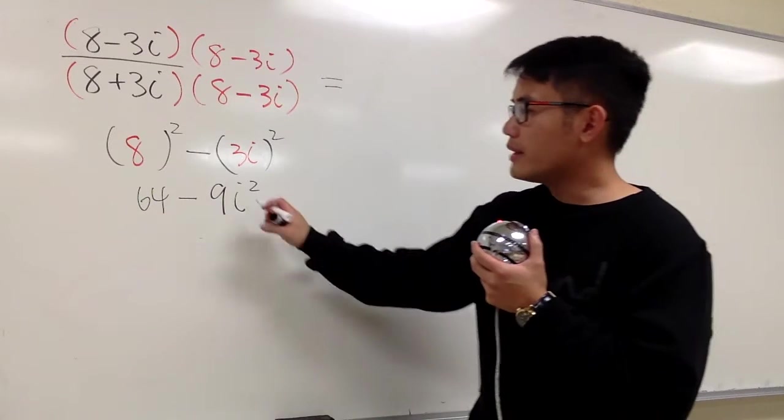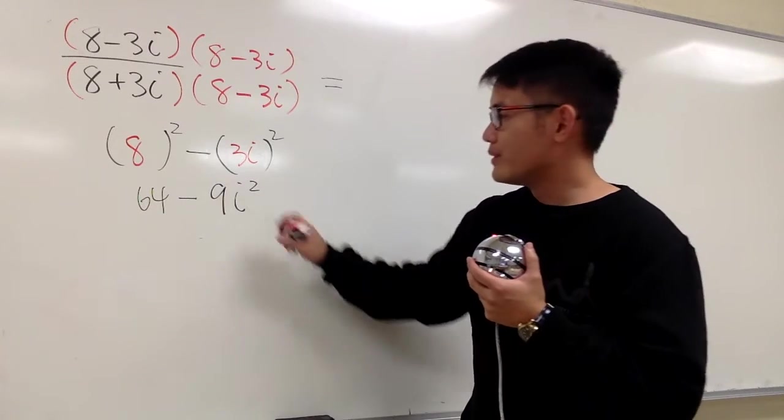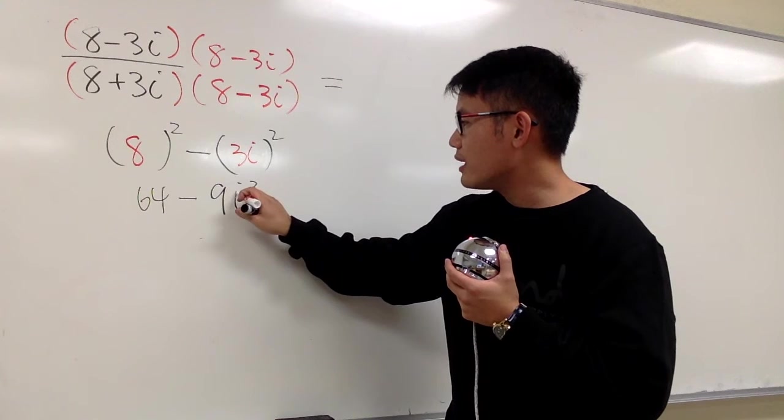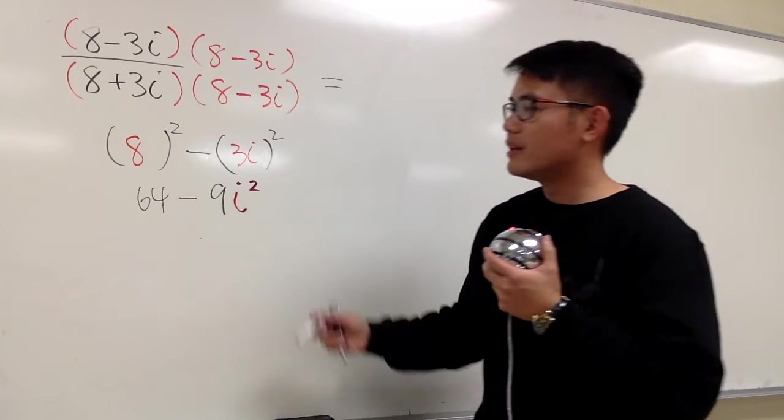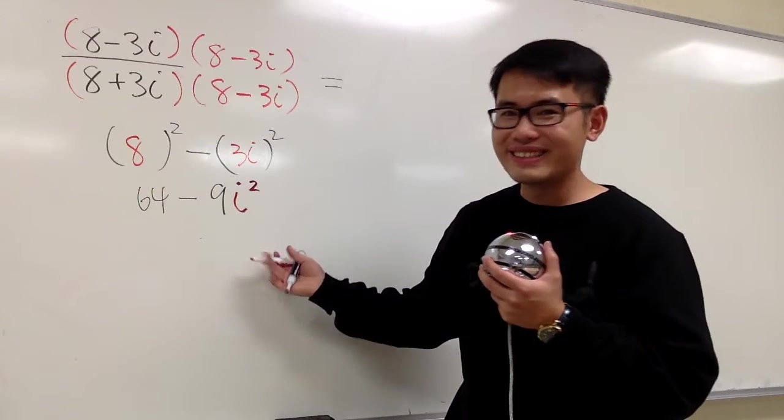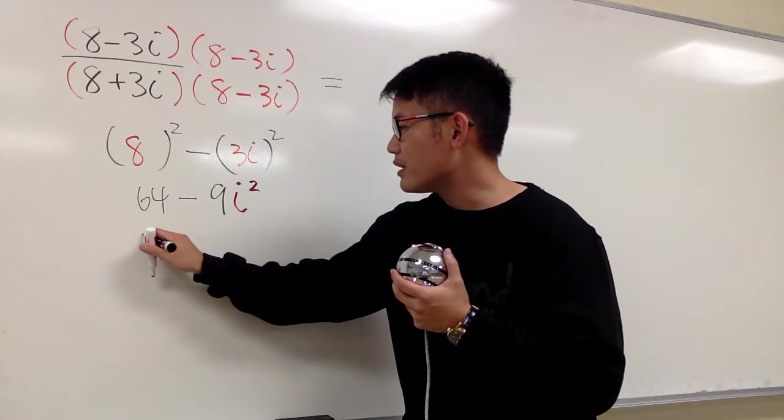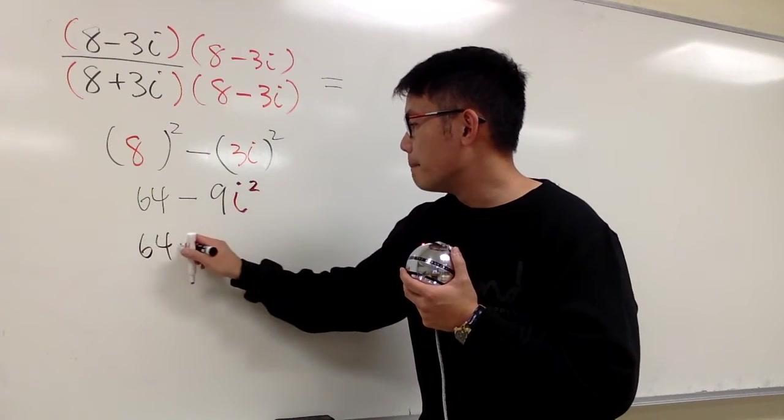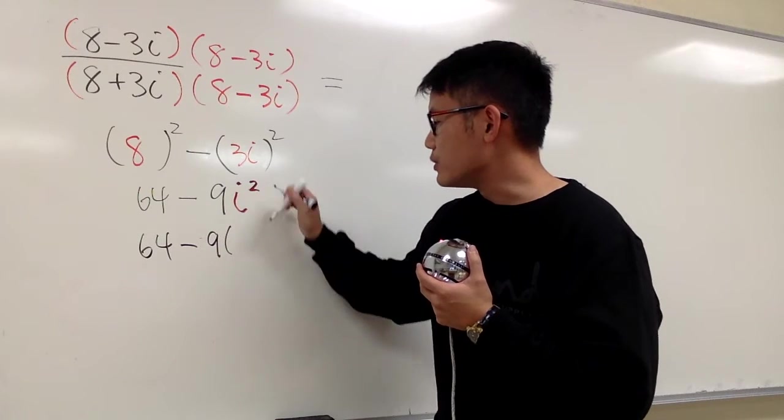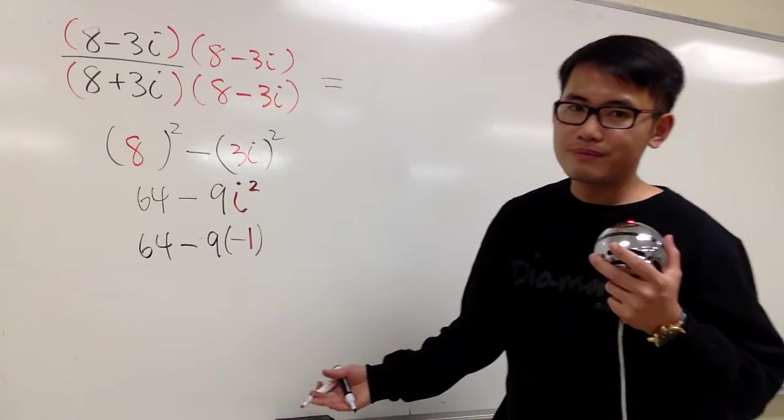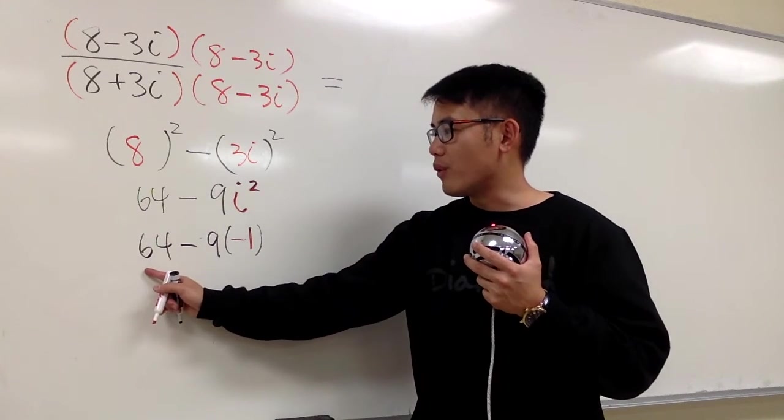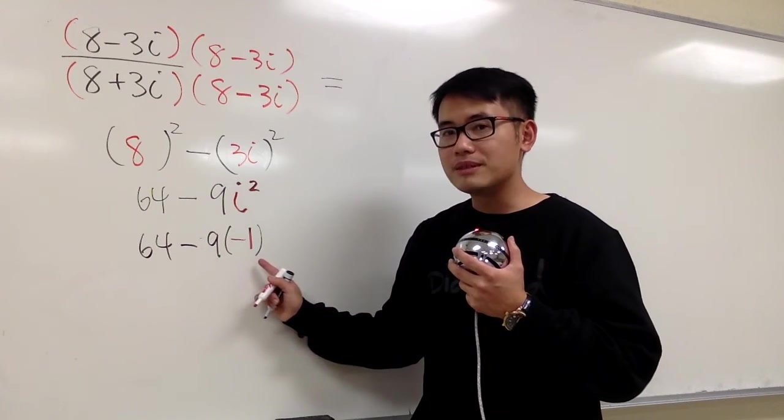And now, what is i squared? Well, focus on the i squared part. You know this is actually a real number. This is just a negative 1. And I'll show you guys all the steps. So right here, we will have 64 minus 9, and we'll change this to negative 1. So, 64 minus 9 times negative 1.